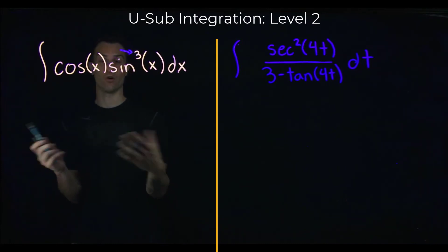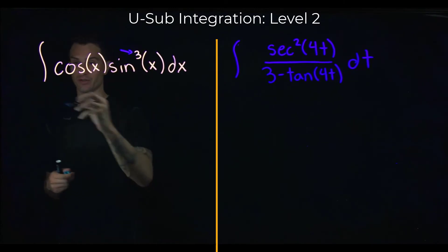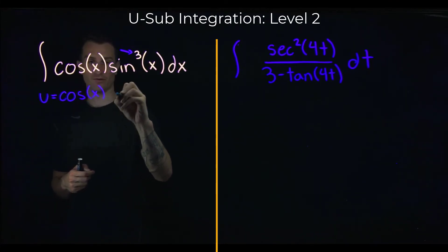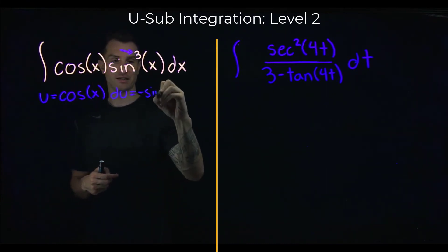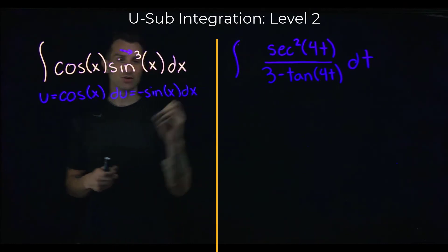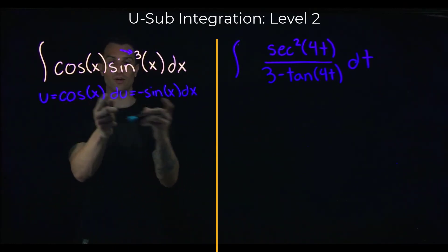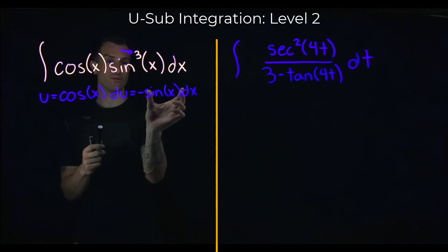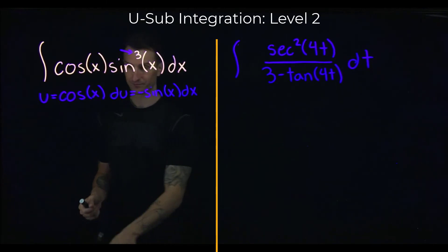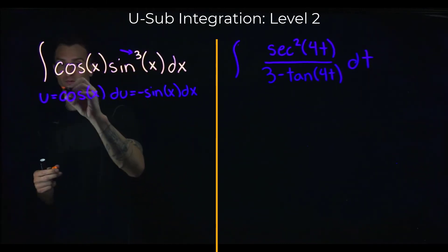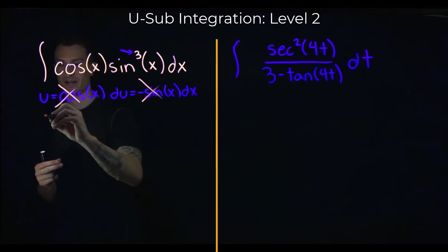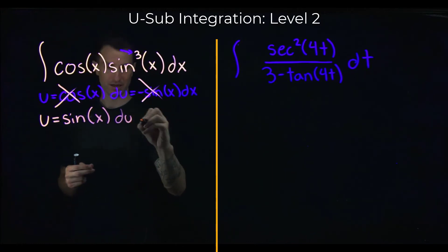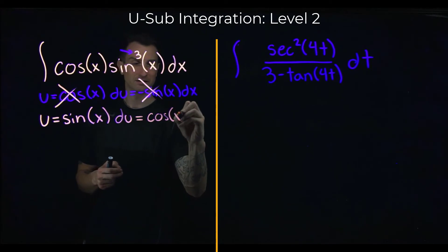Let's start with the wrong choice: u = cosine, so du = negative sine x dx. The issue is we have sine cubed — sine times sine times sine — and this du only lets us get rid of one of them. So that doesn't work.